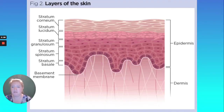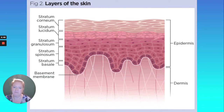Here is a visual where you can see at the top stratum corneum, below that stratum lucidum, below that stratum granulosum, then stratum spinosum, and then stratum basale. And you can see clearly that it is sitting on top of a basement membrane.